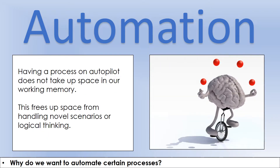Why would we want to do that? Because we have to invest a fair chunk of effort in order to achieve automation. One of the things we want to do in physics is take load off our working memory, because we need it to be able to do some problem solving and logical thinking. If we can put certain processes on autopilot, that's going to free up space for that logical thinking, problem solving, and reasoning that's so critical for success in physics.